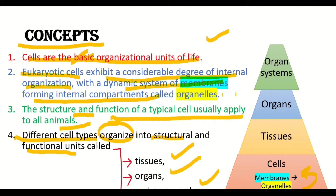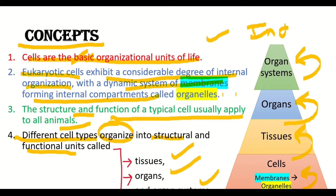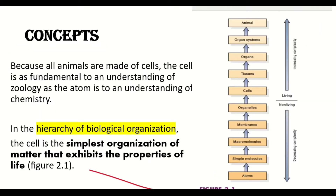As you can see in the diagram, first organelles form from membranes, then they form cells, cells form tissues, tissues form organs and they form organ systems. Moreover, they form an individual, a population, a community and then a biosphere.